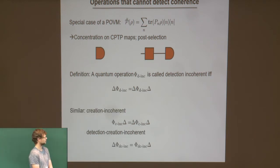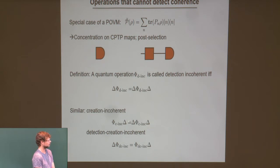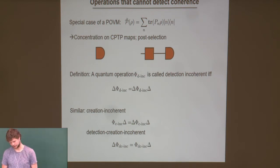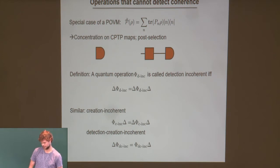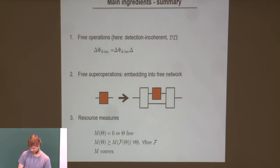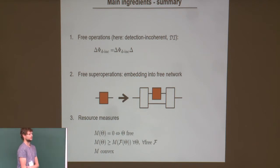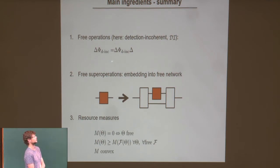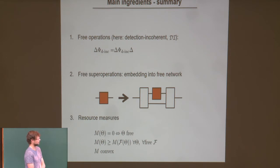One can do similar things for operations that cannot create coherences — which is what is usually done in coherence theory — or also look at operations that can neither detect nor create coherences. To give a short intermediate summary: we have two main ingredients — the free operations, here the detection-incoherent ones denoted DI, and the free super-operations, which are embeddings into free networks. This allows us to use resource measures to quantify the value of operations that should be faithful, monotonic, and convex.